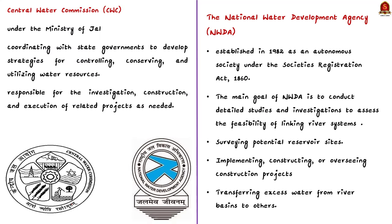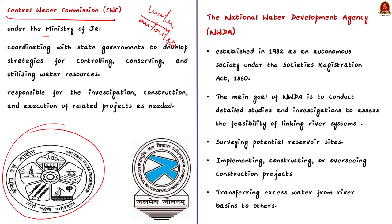Our next topic covers commissions and authorities established to manage water distribution in India. The first is the Central Water Commission (CWC), a key technical organization for water resource management. It operates under the Ministry of Jal Shakti, within the Department of Water Resource, River Development and Ganga Regeneration. The CWC's main role involves coordinating with state governments to develop strategies for controlling, conserving, and utilizing water resources, including flood control, irrigation, navigation, drinking water supply, and water power development.